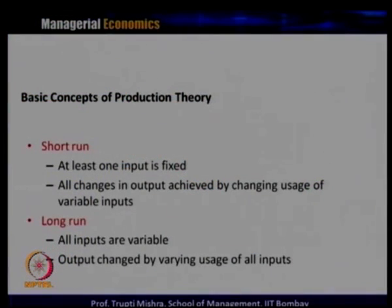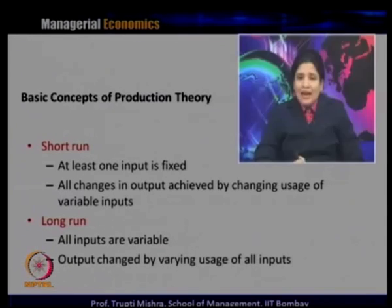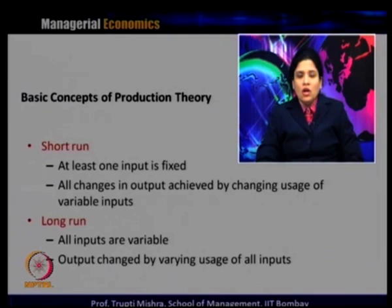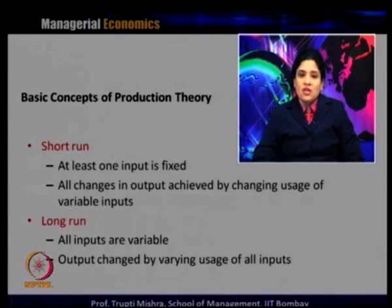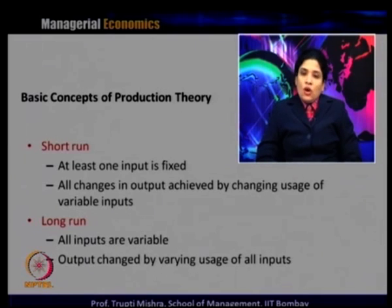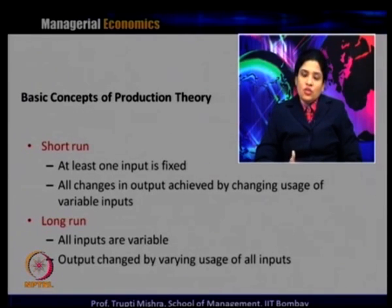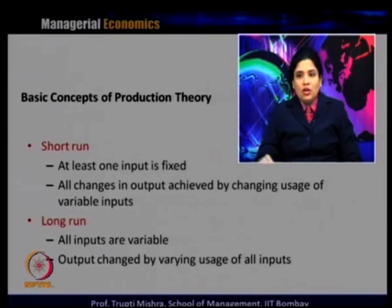Now we will see one of the important concepts in production theory — short run production versus long run production. In the short run, at least one input is fixed and all changes in output are achieved by changing the usage of variable inputs. In the long run, all inputs are variable and output changes by varying the usage of all inputs. So in the short run there is a precondition that at least one input is fixed.